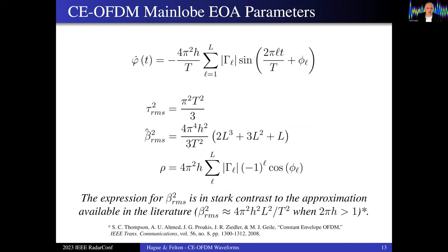Additionally, we can calculate the EOA parameters that characterize the main lobe of the ambiguity function of this waveform simply by knowing the modulation function for the CE-OFDM. If you plug into β_RMS and ρ, as I show in the paper, you get these expressions. Note, this is an exact closed form for RMS bandwidth for any given modulation index, pulse length, or number of carriers, and is in stark contrast to the approximation you may find in the literature that held only for large modulation index. Additionally, that coupling factor is a function of the PSK sequence. So we may be able to control the degree of coupling in that ambiguity function angle.